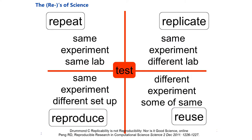Now let's come to another aspect of scientific research, which is the so-called reuse of science. Once you have your scientific results, what's important is that you can repeat, replicate, reproduce, and in the end reuse your scientific results — especially if the data have been collected with public funds. Reusability of scientific results is very important.